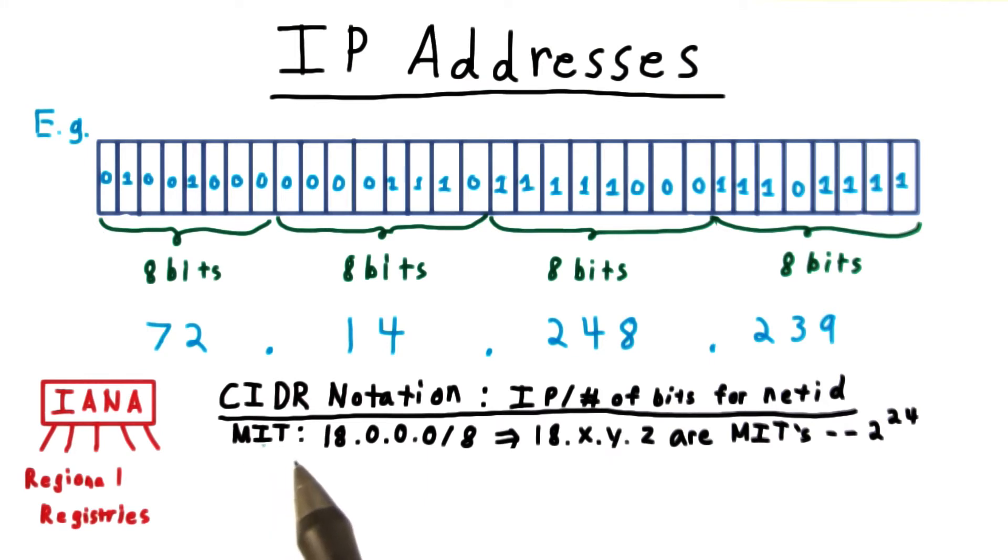For example, MIT was allocated long ago the range 18.0.0.0/8, meaning that any IP starting with 18 belongs to MIT. There are about 2 to the 24th of them. Georgia Tech has the range 130.207.0.0/16, meaning that any IP starting with 130.207 belongs to Georgia Tech. There are about 2 to the 16th of those because there are 16 unspecified bits in this range.